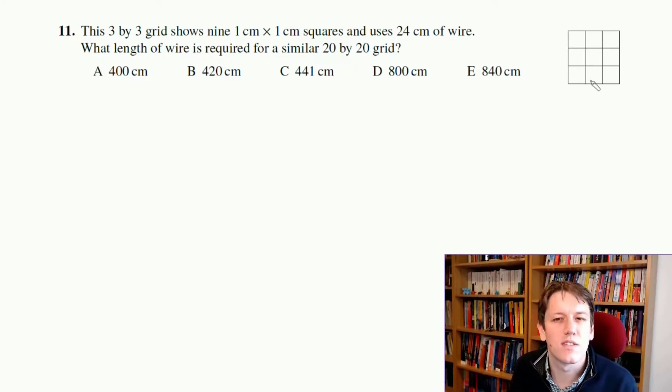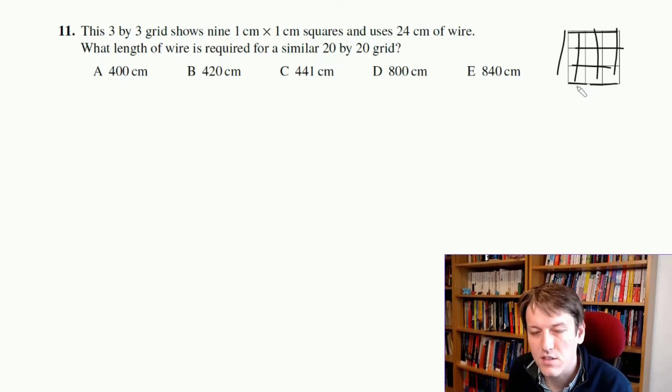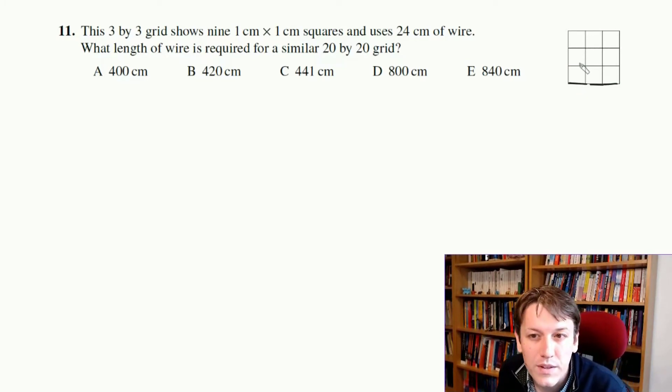So it's saying that all of the side lengths of these smaller squares are 1cm, so if I added these together, I'd have 1, 2, 3 along the bottom here, so that would be 3, 3, 3, 3, that would be 12, and then there'd be 3, 3, 3, 3, 3, which is another 12, so I get 24 in total.